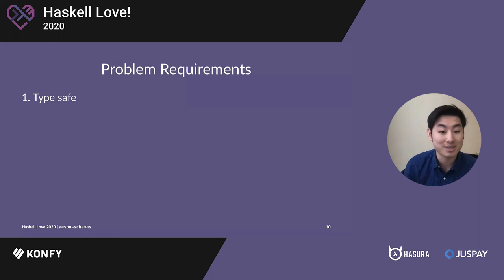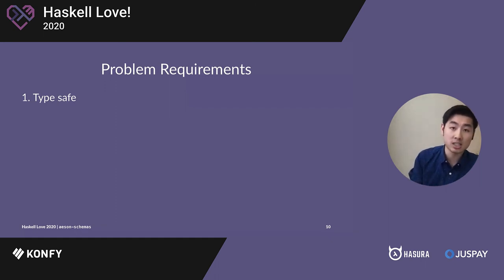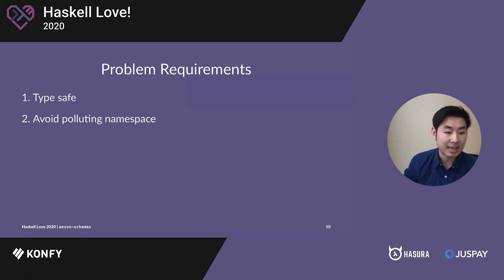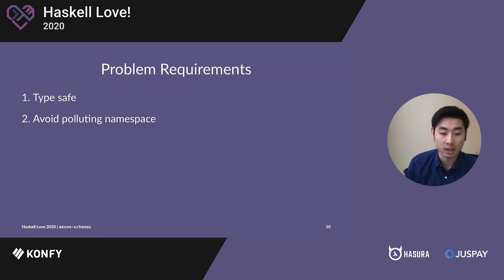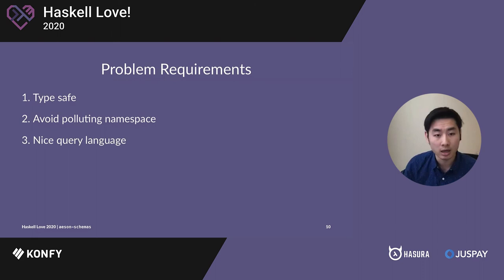Now that we've seen some of the problems with the current situation, what are the requirements for writing a solution? One thing I want to point out is that none of this is AESON's fault, but rather it's due to the way we're forced to write and define Haskell data types. The first requirement is type safety — we're Haskell devs after all. If we know a schema of the JSON object, it would be nice if the compiler could check that the keys we're extracting are verified at compile time. Second, it would be nice to avoid polluting the namespace, since multiple record fields with the same name cause conflicts at the call site. And lastly, it would be nice to get a better query language, since record fields are notoriously bad at getting data out of nested data types and lenses aren't much better.